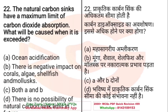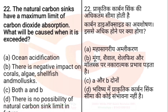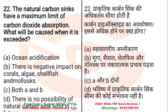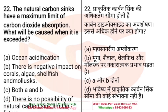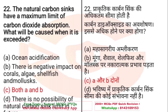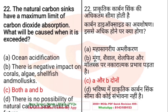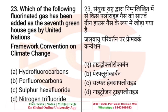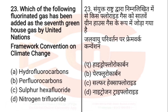Question: Natural carbon sinks have a maximum limit of carbon dioxide absorption. What will be the cause when it is exceeded? A. Ocean acidification, B. There is a negative impact on corals, algae, shellfish and mollusks, C. (option C), D. There is no possibility of natural carbon sink limiting. The right answer is both A and B — ocean acidification and negative impact on corals, algae, shellfish and mollusks.